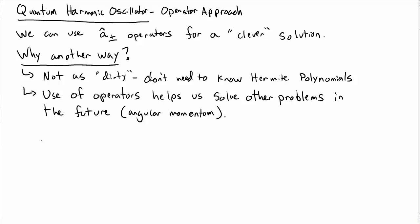We're now going to solve the quantum harmonic oscillator in a completely different way using what's called the operator approach. We can use the â₊ or â₋ operators for a really clever solution. Why do we have another way? It's not as dirty, and it's going to help us solve other problems in the future.